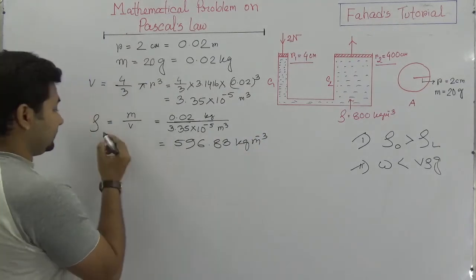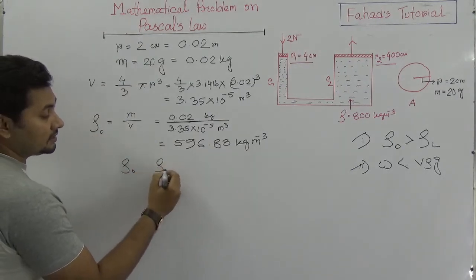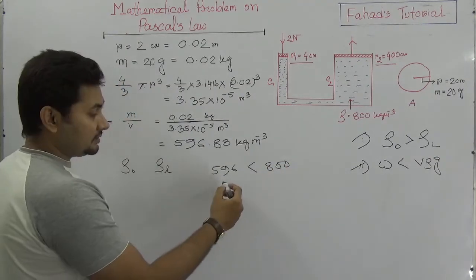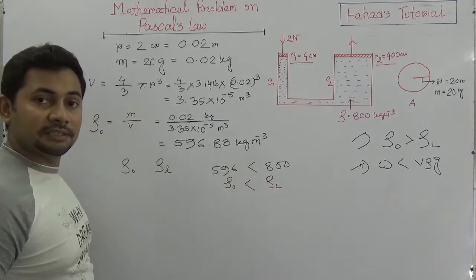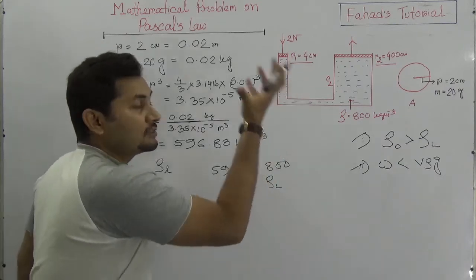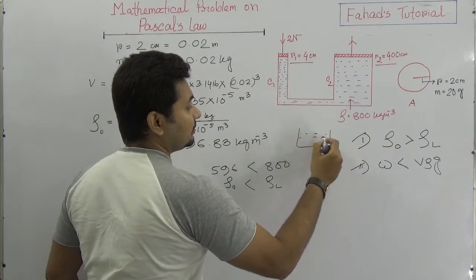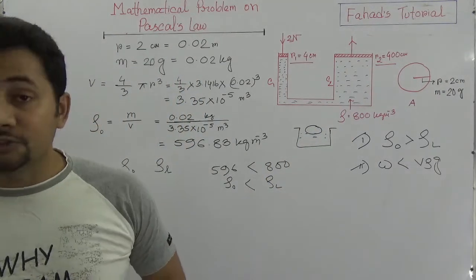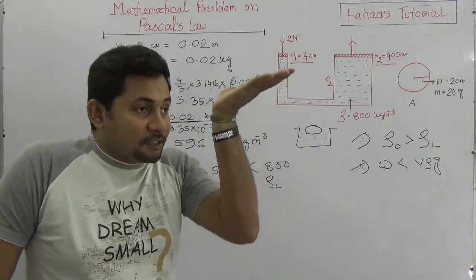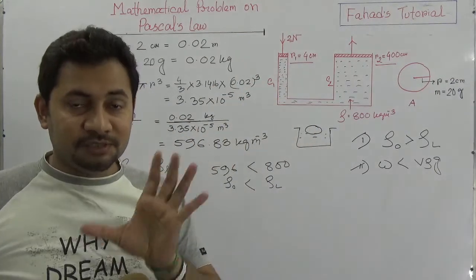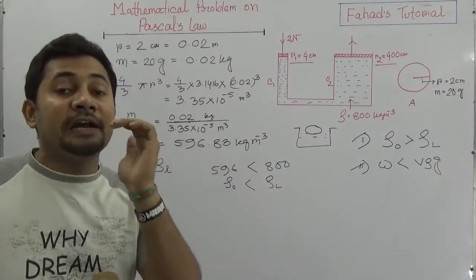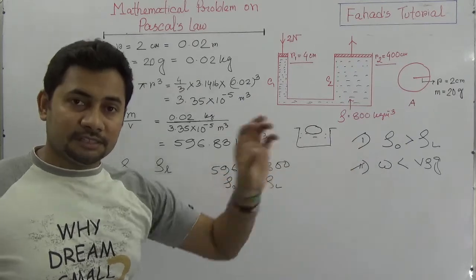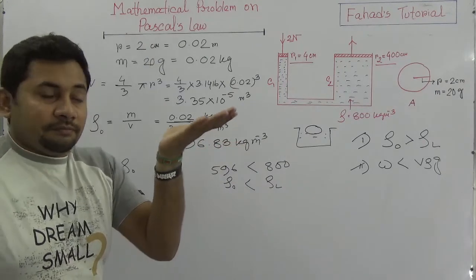The density of the object is 596.83 kg/m³, and the density of the liquid is given as 800 kg/m³. Since 596.83 < 800, the density of the object is less than the density of the liquid, which proves that the object will float in the liquid. So according to this first approach, the object floats.